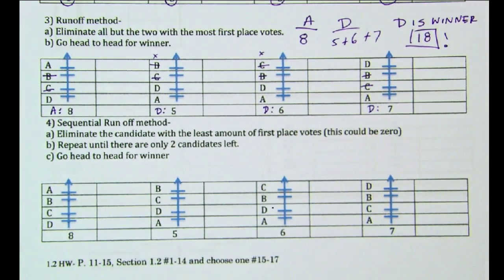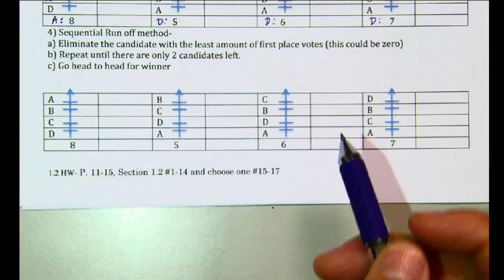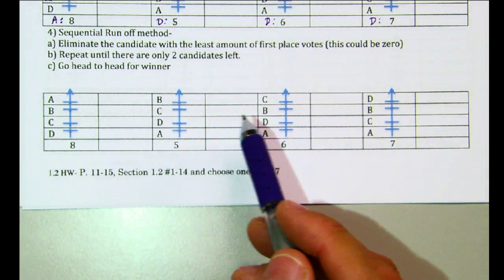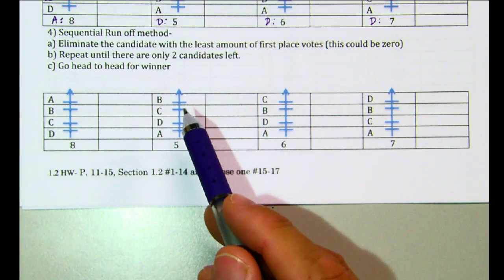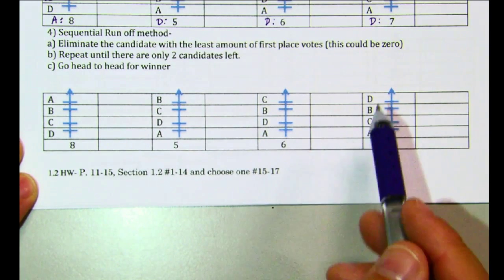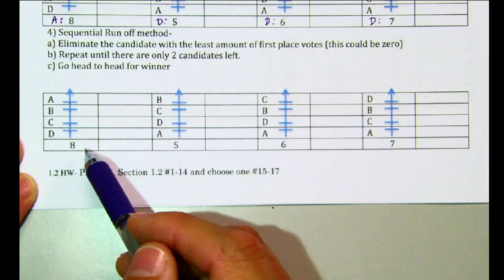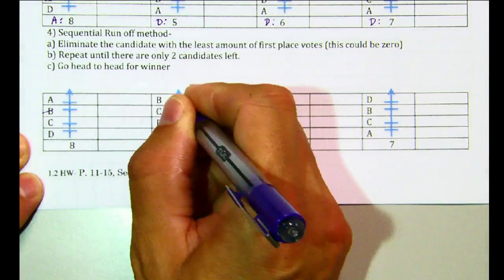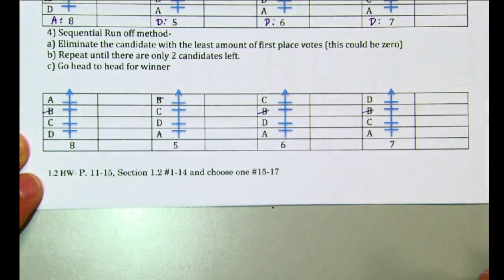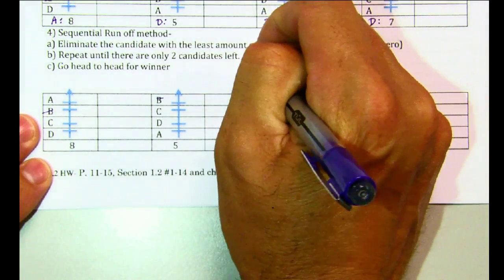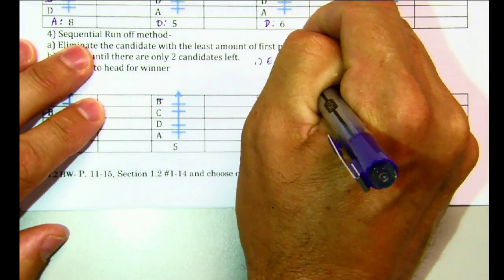Now, the last method is the sequential runoff method. This one is, once you get it, it's okay. But you have to be able to go back to this method and get it well. So what you're going to do is you're going to eliminate the candidate with the least amount of first place votes one at a time. And then you're going to shuffle everything up. So looking at this one, the person who has the least amount of first place votes appears to be B right here. B has five first place votes. C has six. D has seven. A has eight. So what we're going to do is we're going to go across the board and eliminate B. Because B has the least amount of first place votes. So your first step is to eliminate B.